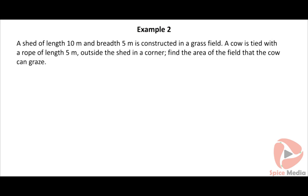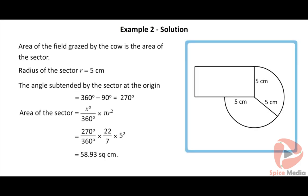Here is another example on the area of the sector: a shed of length 10 meters and breadth 5 meters is constructed in a grass field. A cow is tied with a rope of length 5 meters outside the shed in a corner. Find the area of the field that the cow can graze. Click on the solution button to view the answer.